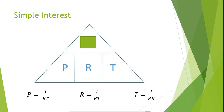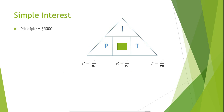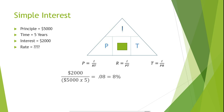Let's try another example. Alan took out $5,000 for five years and paid a total of $2,000 in interest. This loan charged simple interest. What was the interest rate of the loan? Since we are solving for the rate of the loan, our formula is rate equals interest divided by principal times time, or R equals I divided by P times T.